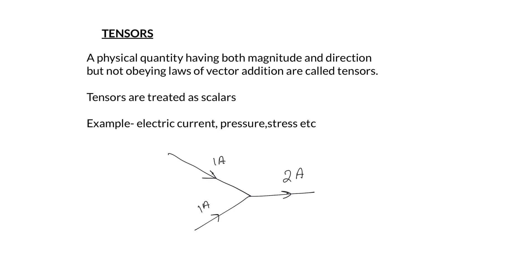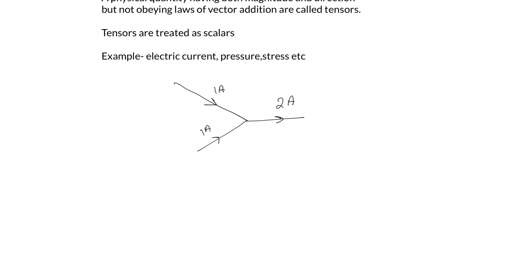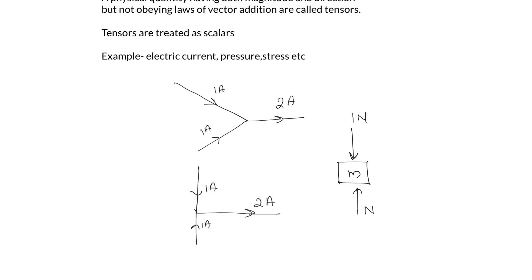Irrespective of the direction the currents are coming from, their sum is always 2 amperes. So current does not obey the vector addition rule. In contrast, if a 1 newton force acts upward and a 1 newton force acts downward on an object, the net force is zero — force does obey the vector addition rule. Since electric current has magnitude and direction but does not obey vector addition, quantities like these are considered scalars. Tensors are thus classified as scalars.